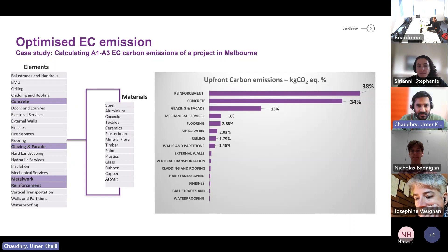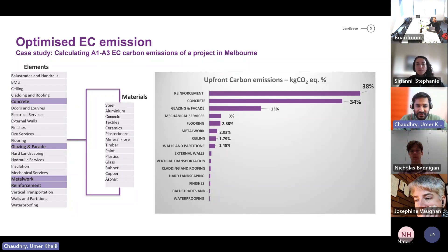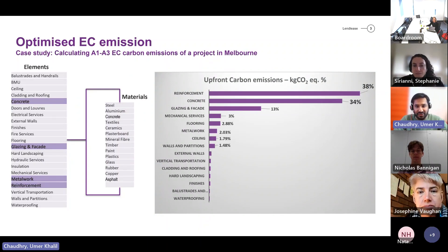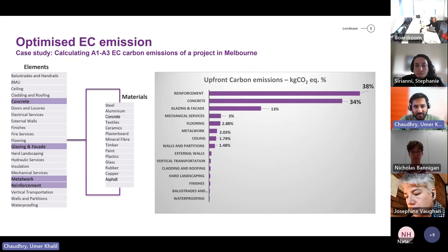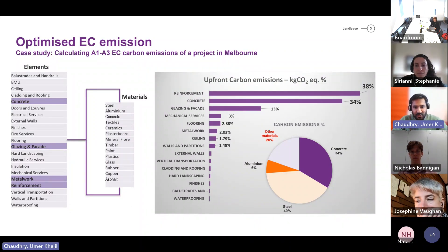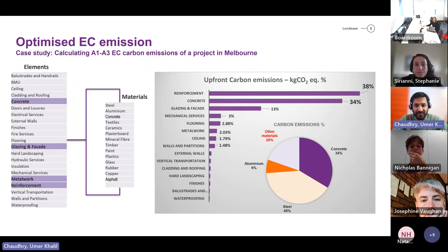Looking at the total emissions contributions of those elements, reinforcement steel has the highest emissions contribution at around 38 percent, concrete is second at 34 percent, and glazing and facade — which mainly contain aluminium — are the third largest contributor. There are some other materials used in flooring, ceilings, walls and partitions which also have emissions, though not as high as concrete, steel and aluminium. Other materials combined account for around 20 percent, which is still a very high quantity that we cannot ignore.